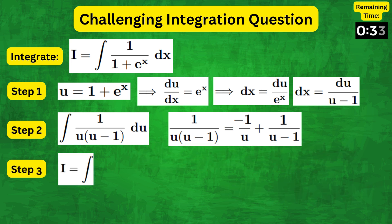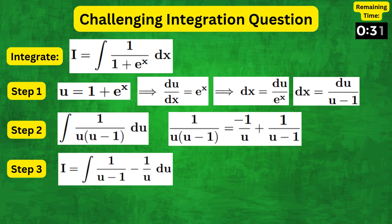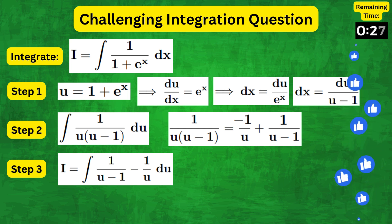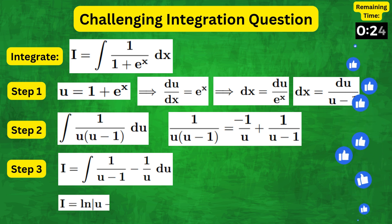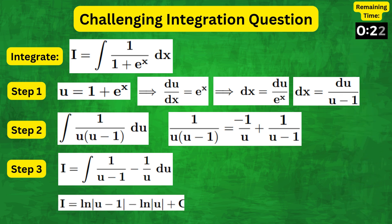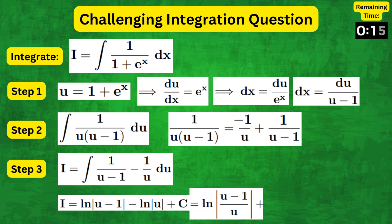Hence, i becomes the integral of 1 over u minus 1 minus 1 over u, du. We can perform the integration to get i equals natural log of |u minus 1| minus natural log of |u| plus c, which tidies up as natural log of |u minus 1 over u| plus c.